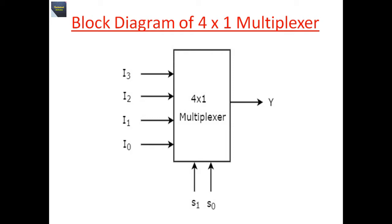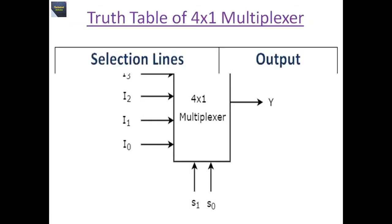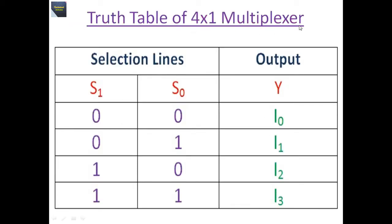First, I provide the block diagram of a 4x1 multiplexer. The 4x1 multiplexer has four data inputs: i3, i2, i1, and i0; two selection lines s1 and s0; and one output y. In the truth table, when selection lines are 0 0 output is i0, when 0 1 output is i1, when 1 0 output is i2, and when 1 1 output is i3.